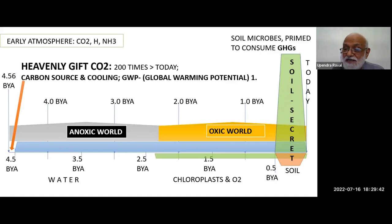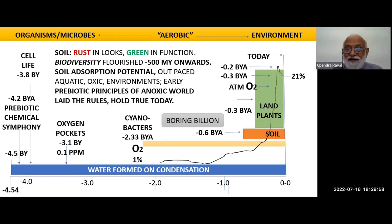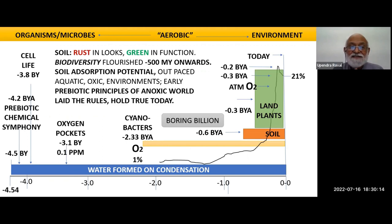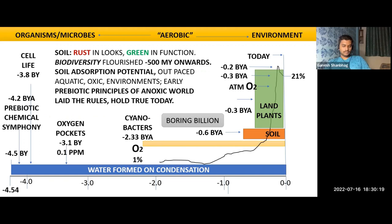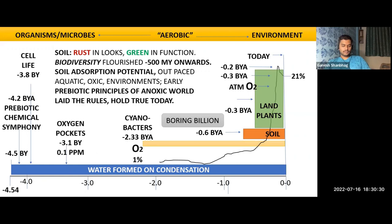Soil microbes are prime consumers of greenhouse gases. All our urban life and development, so-called, has not given due importance to the soil. At one stage, nearly 200 million years ago, oxygen went up to 33–34%, then stabilized at 21%. The soil is green in function. Oxygen became the terminal electron acceptor only during these 500 million years. For the first 4 billion years, it was sulfur that was the terminal electron acceptor.